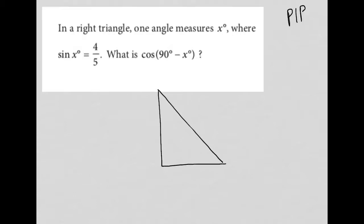The next part of that strategy is once you've drawn, you want to label with all the information provided in the question. The question tells us that one of the angles measures x degrees, so I'm going to label one angle as x degrees. It also tells me that sine of x is equal to 4 over 5.